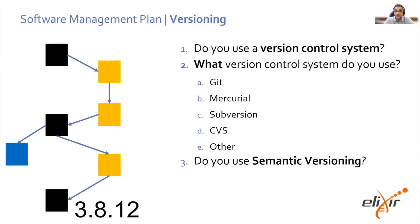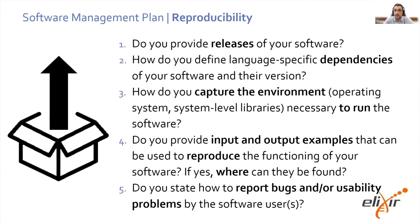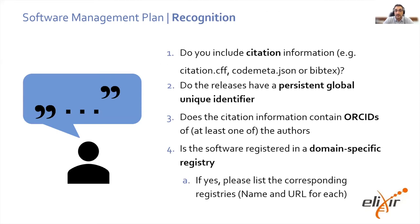For versioning, version control is one of the key elements to keep in the SMP, so questions could be: what are the different version control systems you are using? And finally, looking at reproducibility and recognition: how can you ensure that the environment of the software is captured effectively? Can you provide input and output examples so that the actual function of your software can be reproduced? How can you get reports on bugs and usability problems back from the community? And ultimately, how to ensure the community can recognize the role of the software — through persistent identifiers, citation information, and connection to registries.